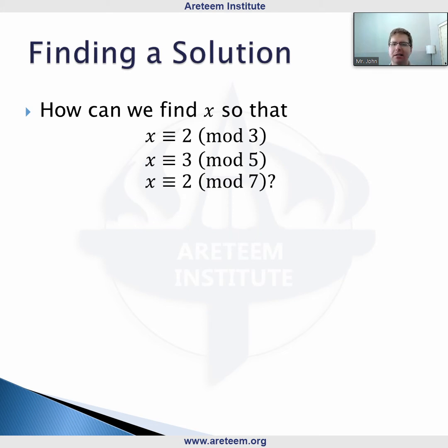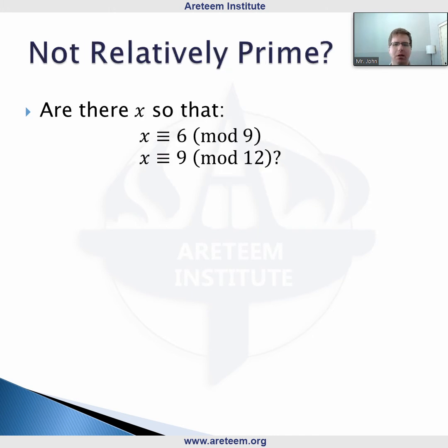Now, what happens if we are in a situation where the Chinese remainder theorem does not apply? Let's look at that in two examples. Our first is mod 6 and mod 9. The GCD of 9 and 12 is 3. This means their LCM is not their product, not 108. Their LCM is actually 36.